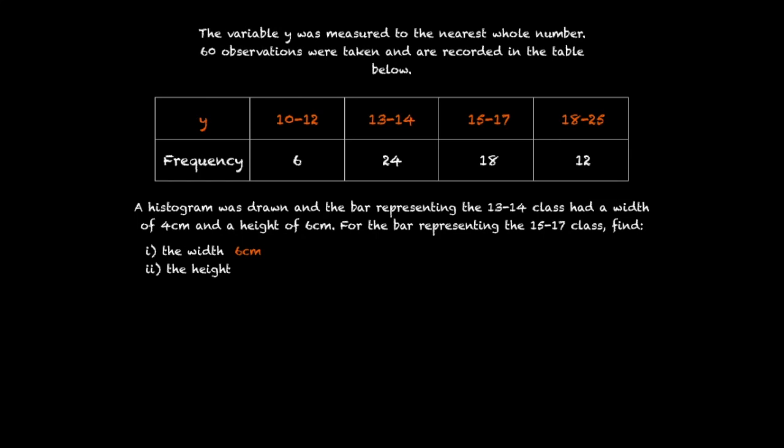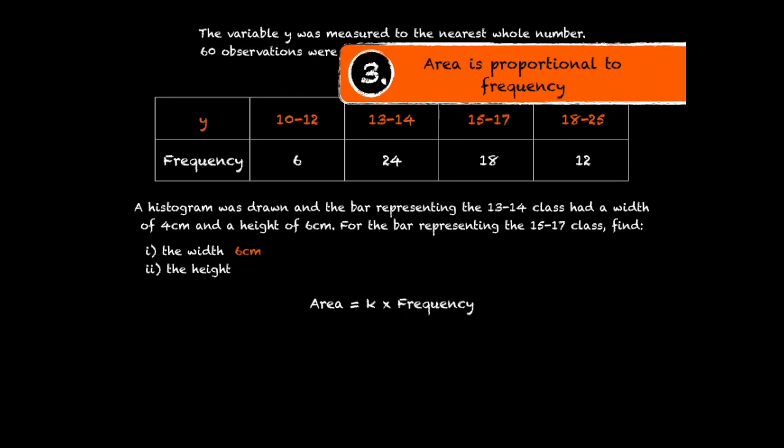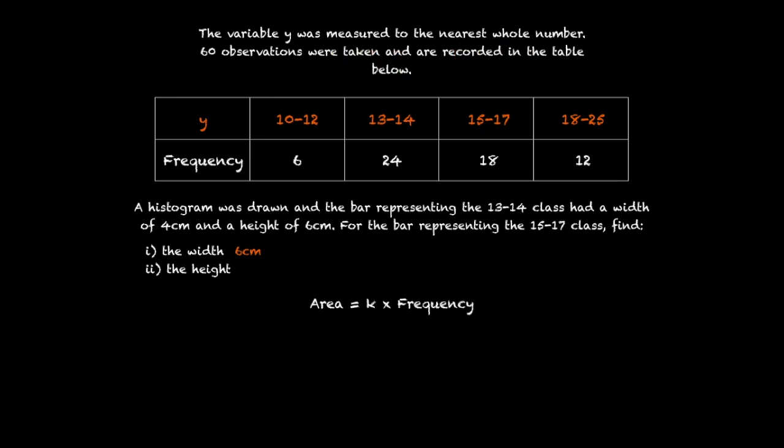In order to work out the height, let's refer to the third characteristic we mentioned about histograms. Area is proportional to frequency. Or in other words, area equals some constant k times frequency. Let's use what we know about the 13 to 14 class to work out what k is. The area of the 13 to 14 class is 4cm times 6cm. So 24cm squared is the area. And we know the frequency is 24. And so 24 equals k times 24. So k is equal to 1. And so the area is equal, in this case, to the frequency.